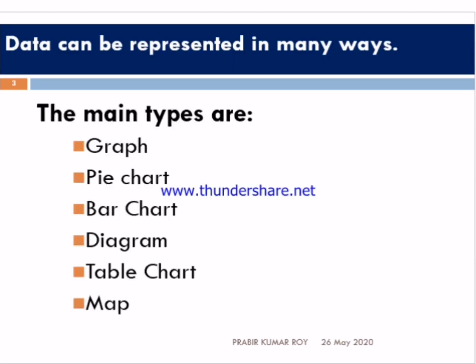In graph, chart, and map, what is the main thing? The main thing is data. Here we can see on the screen that data can be represented in many ways. The main types are graph, pie chart, bar chart, diagram, table chart, and map.